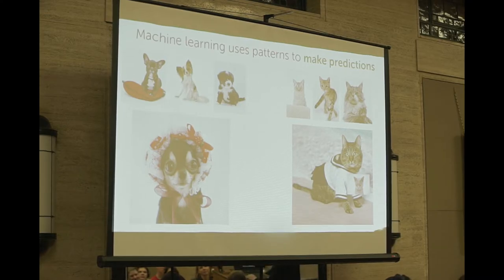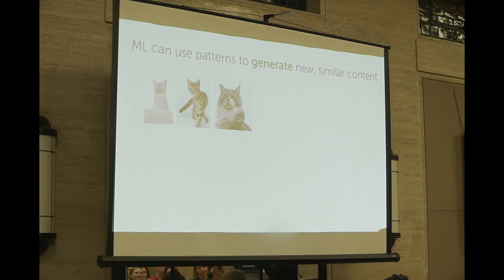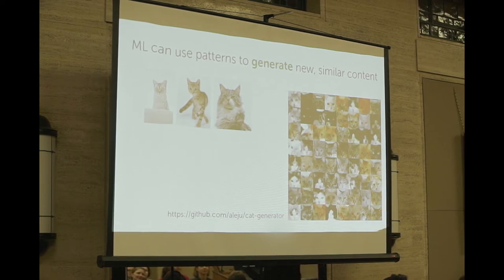Machine learning has been getting a lot of attention for doing something else — not just finding patterns and making predictions, but actually generating new content. We could take a machine learning algorithm, show it thousands of pictures of cats, and ask it to generate new data that looks like those pictures but isn't exactly the same. We can actually produce pictures of cats that look convincing — so if you were worried about running out of cat photos on the internet, we have a solution.